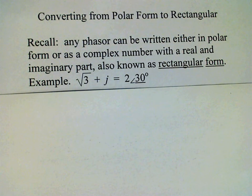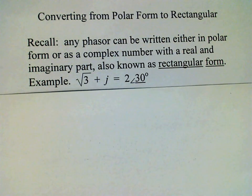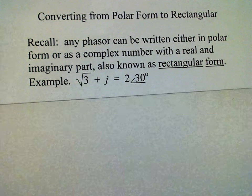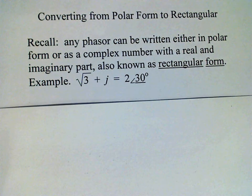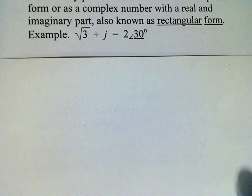For example, we have √3 + j in rectangular form is equivalent to 2 at 30 degrees. Let's see why that's true.